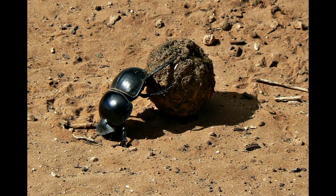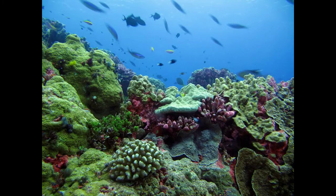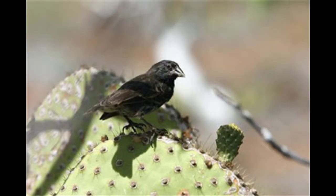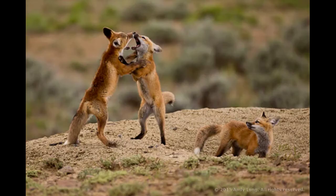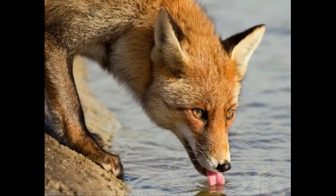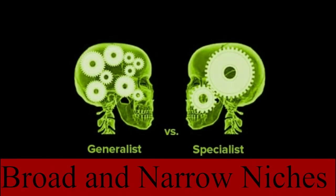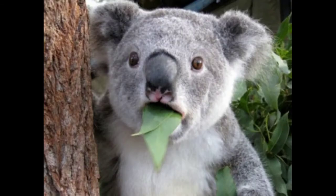A niche is an organism's role in an ecosystem. A niche not only includes the environment an organism lives in, but also the job that organism occupies in that environment. This includes what the organism eats and how it interacts with biotic or living things and also abiotic or non-living things in the environment.